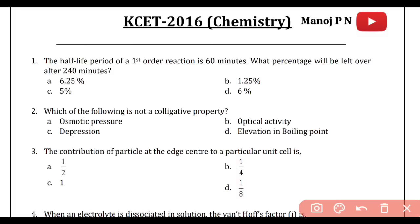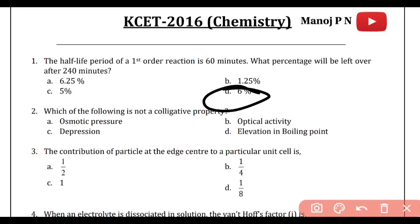Let's do that — identifying the common or similar terms in the options. In option A and option D, we have '6' in common. So the probability of option C and option D being wrong is more. I can stick to option A or option D, giving me a 50-50% chance. Now I have to conclude which one is correct: either 6.5 or 6.